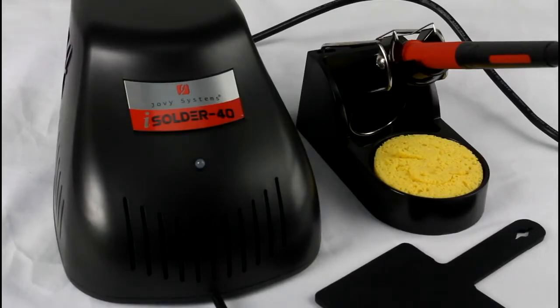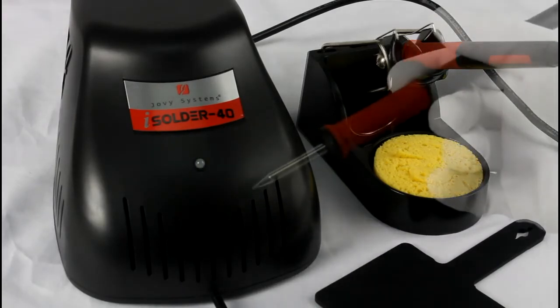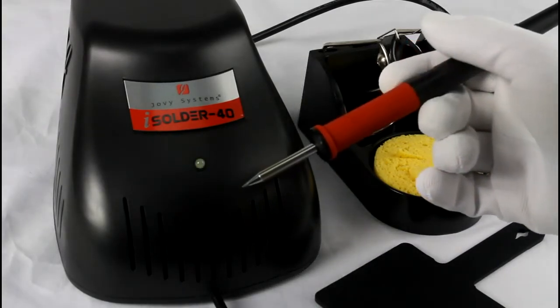When the tip is not being used, the eye control senses no dissipation or thermal variation, which triggers a five-minute countdown to initiate the sleep mode. Move the handpiece to switch the station to operating mode.